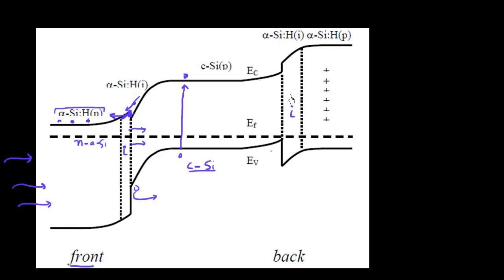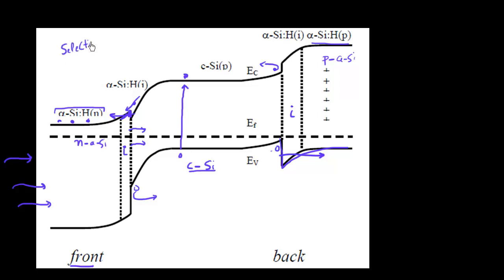Similarly, holes reaching the back contact surface see a barrier that is substantially reduced because of the presence of the heavily doped P-type amorphous silicon layer. These holes can tunnel through this barrier — they love to travel up the hill and the electric field there is favorable for that — so they tunnel through and get collected in the P-plus amorphous silicon layer. The P-plus amorphous silicon layer also repels back any electrons. In this way, these selective contacts are realized nicely using the heterostructure with a thin intrinsic amorphous silicon layer.